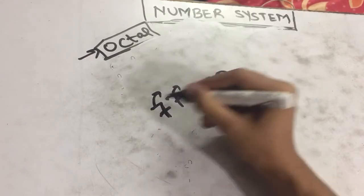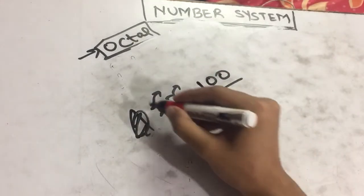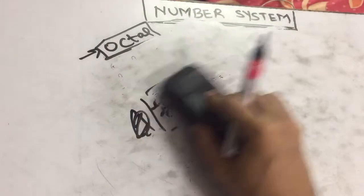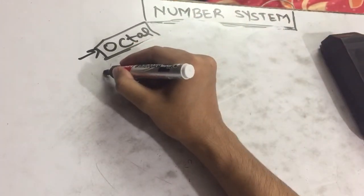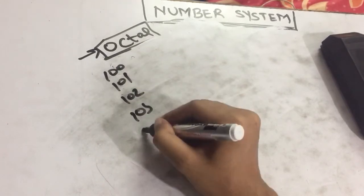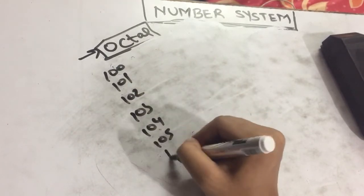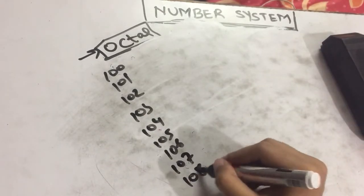After 77, the next value which comes is 0, then 1 carries. Again 7, next value is 0 and 1 carry, so it's 100. After 77 comes 100. So 100, 101, 102, 103, 104, 105, 106, 107.